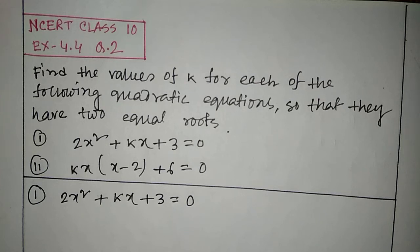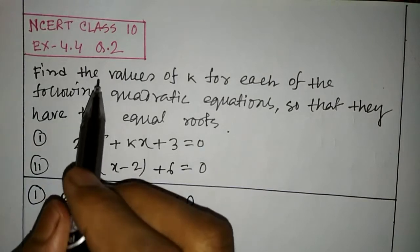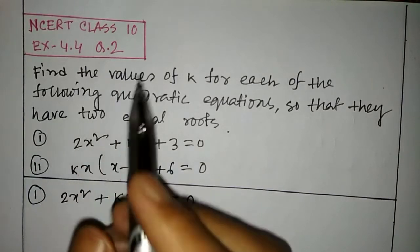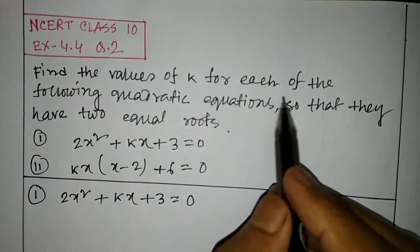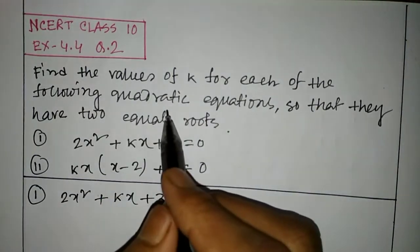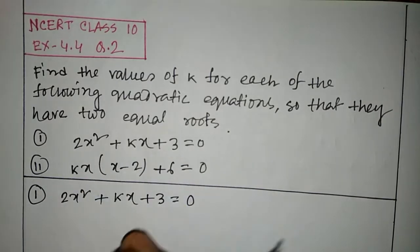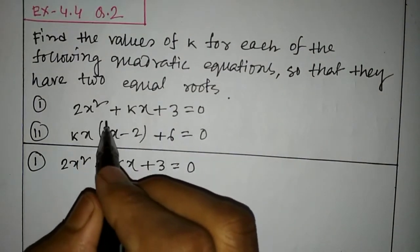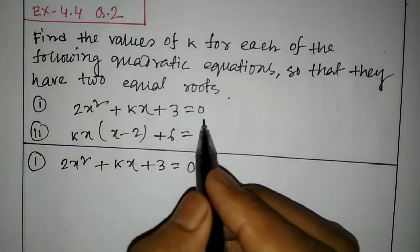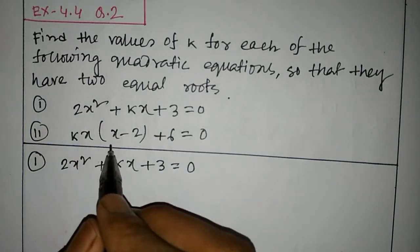Hello friends, we will now solve question number 2 and 3 of exercise 4.4. This is question number 2: find the values of k for each of the following quadratic equations so that they have two equal roots. Question number 1: 2x squared plus kx plus 3 equals 0.